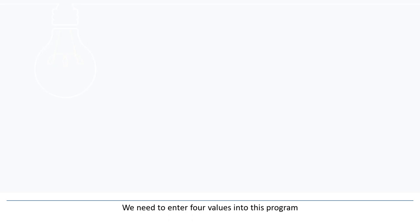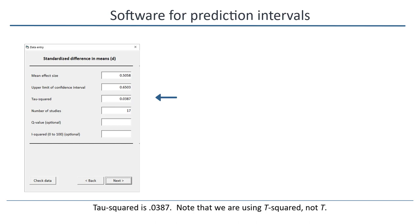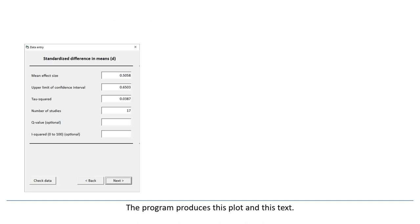The mean effect size is 0.5058. The upper limit of the confidence interval is 0.6503. Tau squared is 0.0387 — note that we use tau squared and not tau. And finally, the number of studies is 17. The program produces this plot and this text.